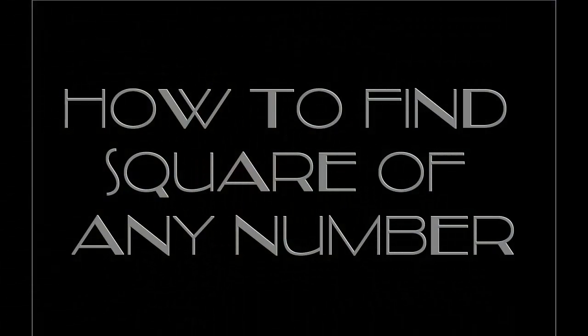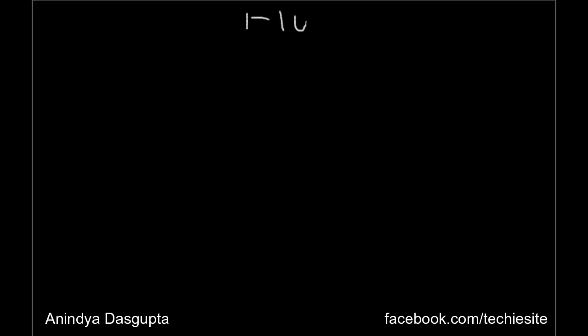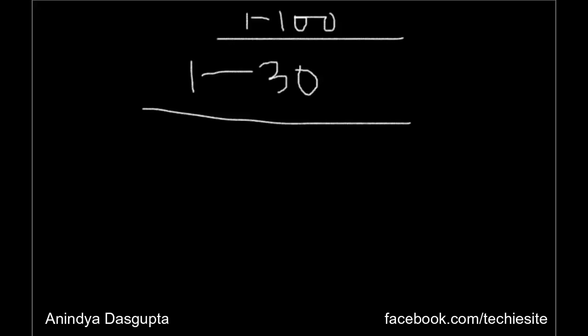Hi guys, today I'll be sharing with you a quick easy trick by which you can find squares of any number between 1 to 100. There is a prerequisite: you have to know the squares of the numbers between 1 to 30. If you know the squares of the numbers between 1 to 30, then you can find the square of any number from 31 to 100.